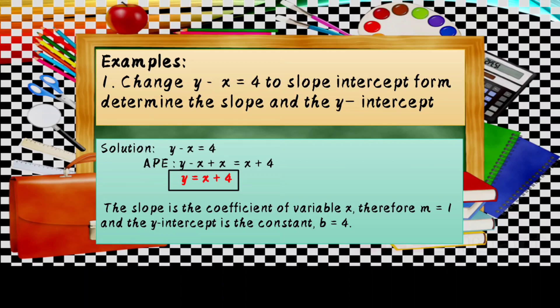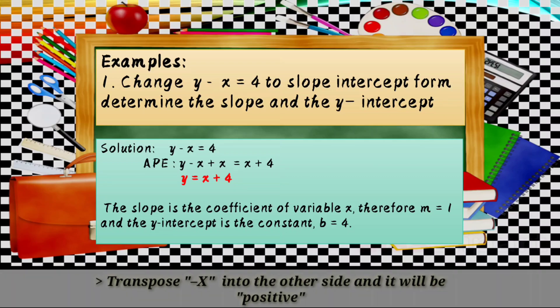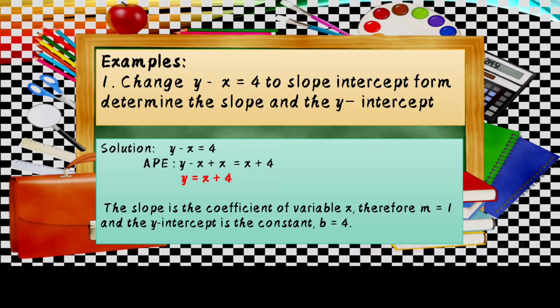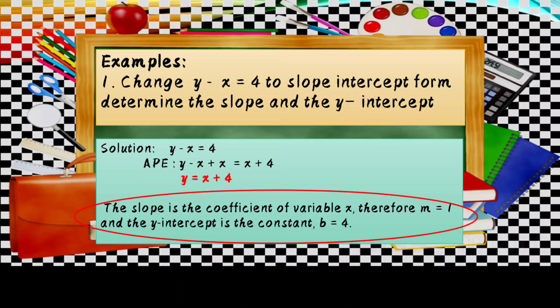There is also another way to solve this. In Y minus X equals 4, transpose negative X to the other side — it becomes positive. So Y equals X plus 4. The slope M is equal to positive 1, and the Y-intercept is positive 4.